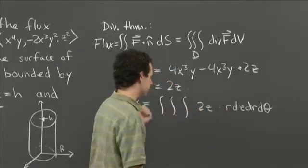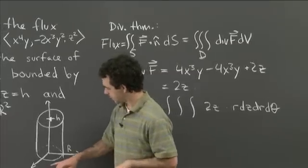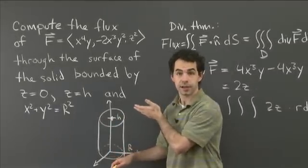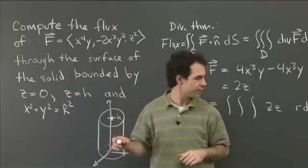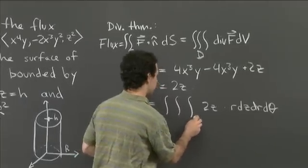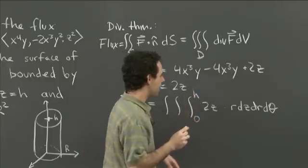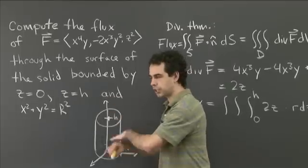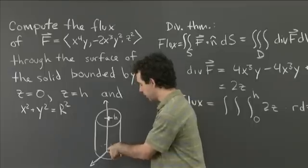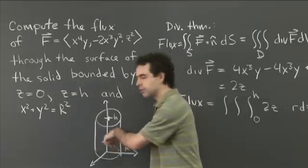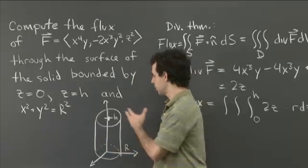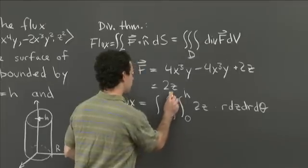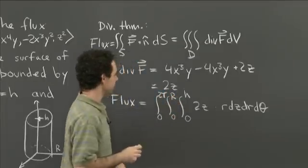Now let's figure out the bounds. The cylinder is bounded between z equals 0 and z equals h, so z goes from 0 to h — that's the innermost integral. The radius r goes from 0 to big R. And theta goes from 0 to 2π, since it's the full circle. So the bounds are: z from 0 to h, r from 0 to R, theta from 0 to 2π. Cylinders are really easy to describe in cylindrical coordinates.